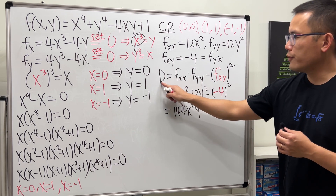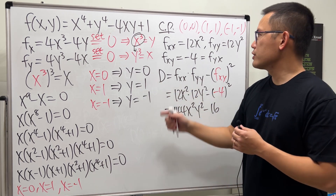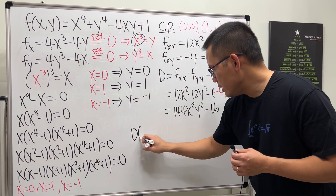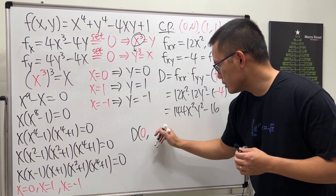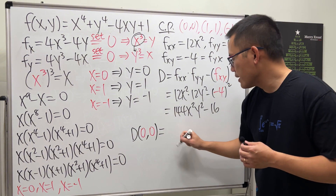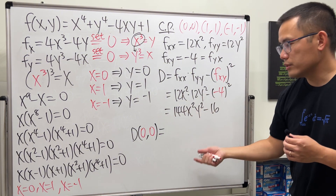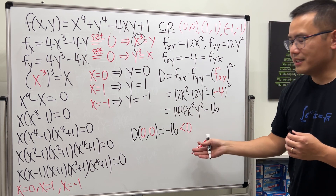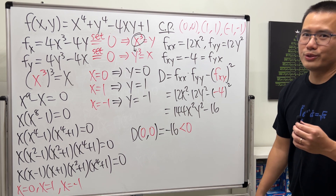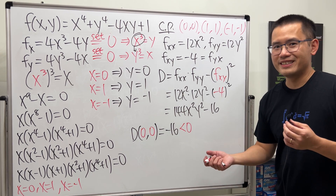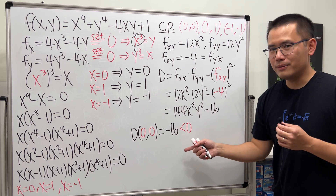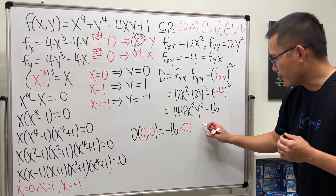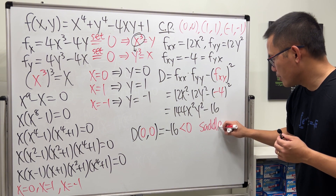Now plug in the critical points. D(0, 0): with x = 0 and y = 0, 144(0)(0) − 16 = −16. That's less than zero, so we can immediately conclude there is a saddle point at the origin (0, 0).